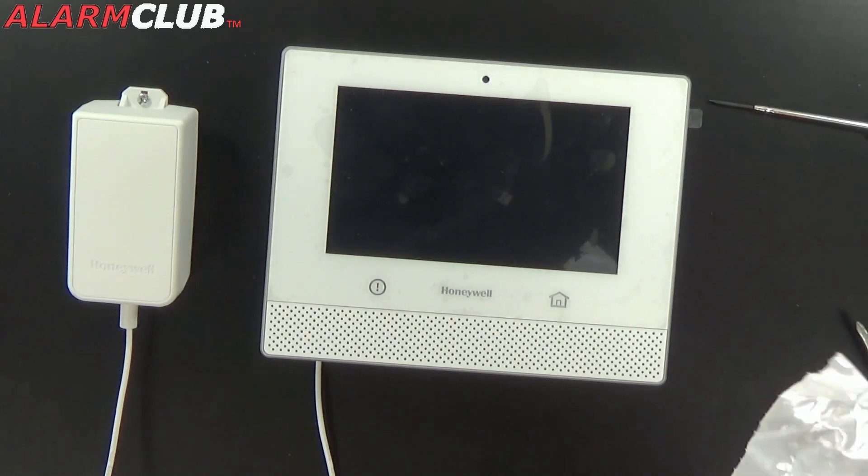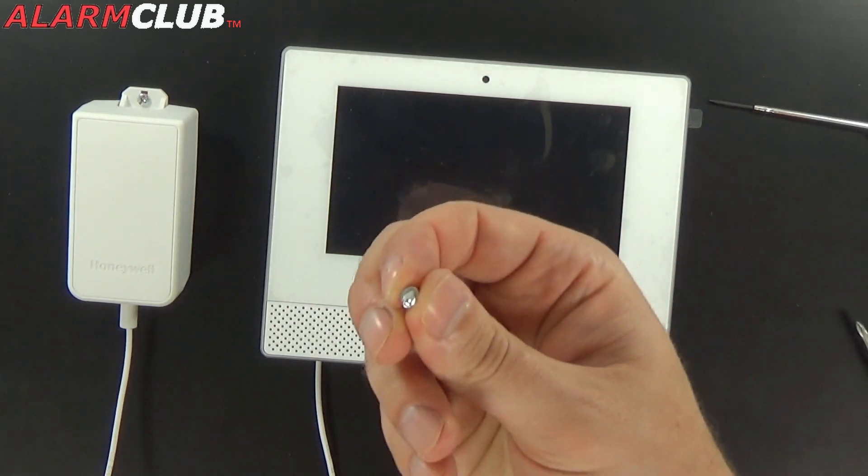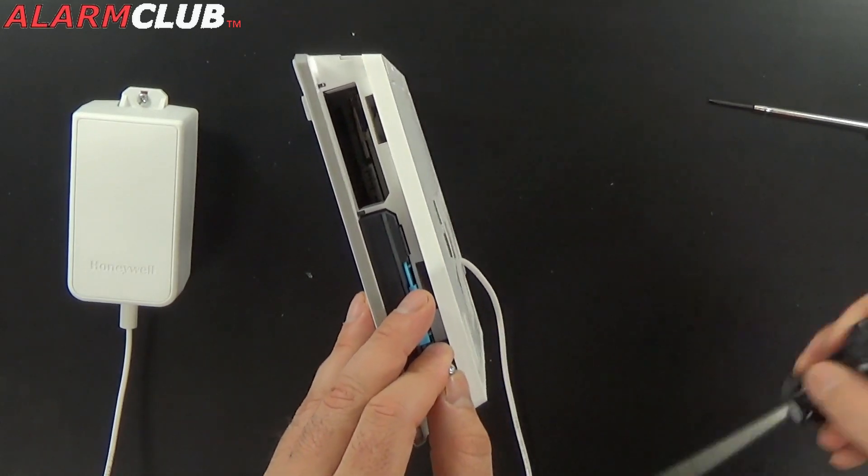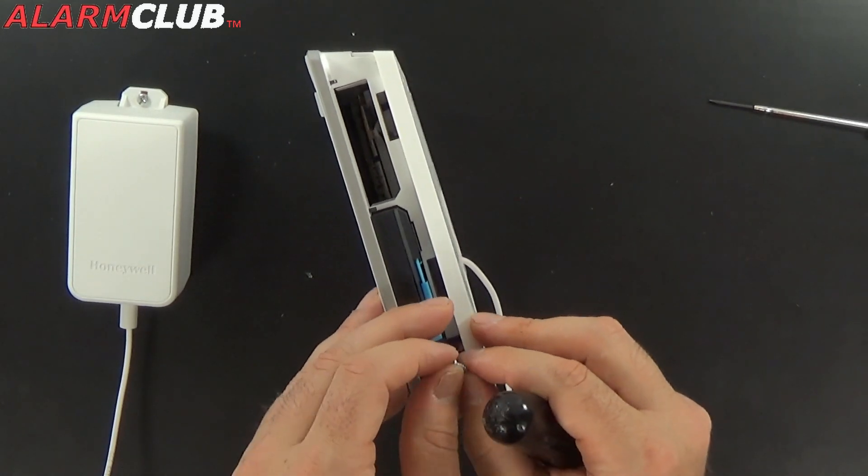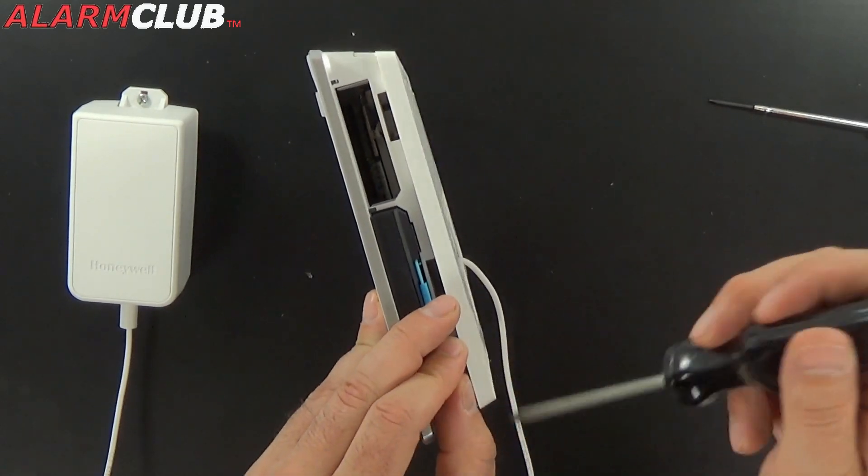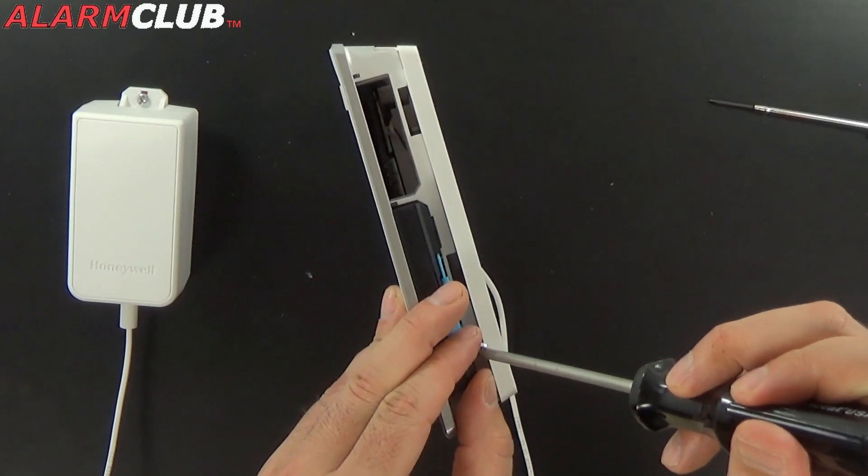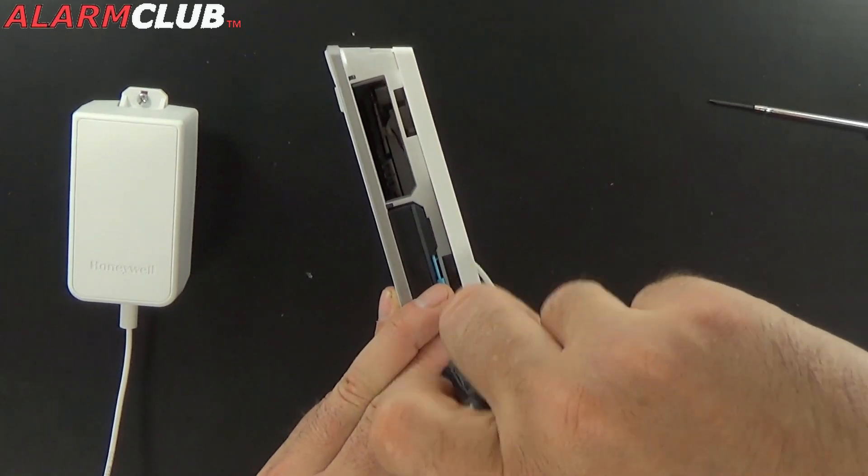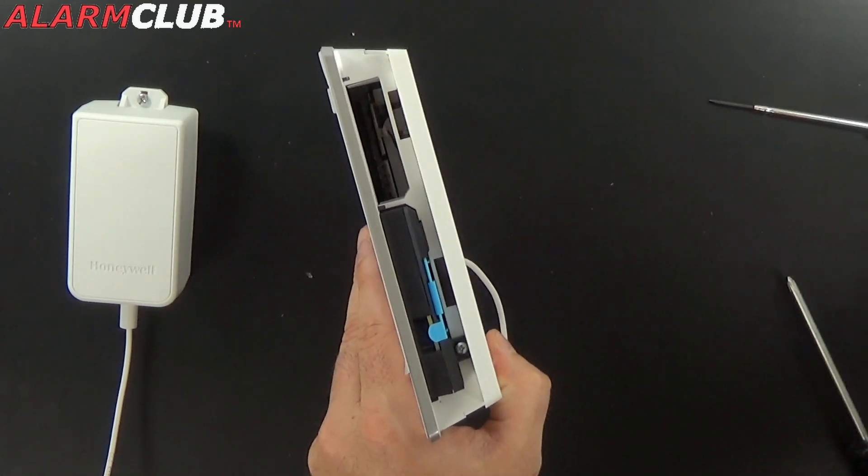Go ahead and remove that from the packaging. Go ahead and take your screw along with your Phillips head screwdriver here. And you want to insert the screw into the designated terminal. And just go ahead and screw that down. And that will secure the cellular module into place.